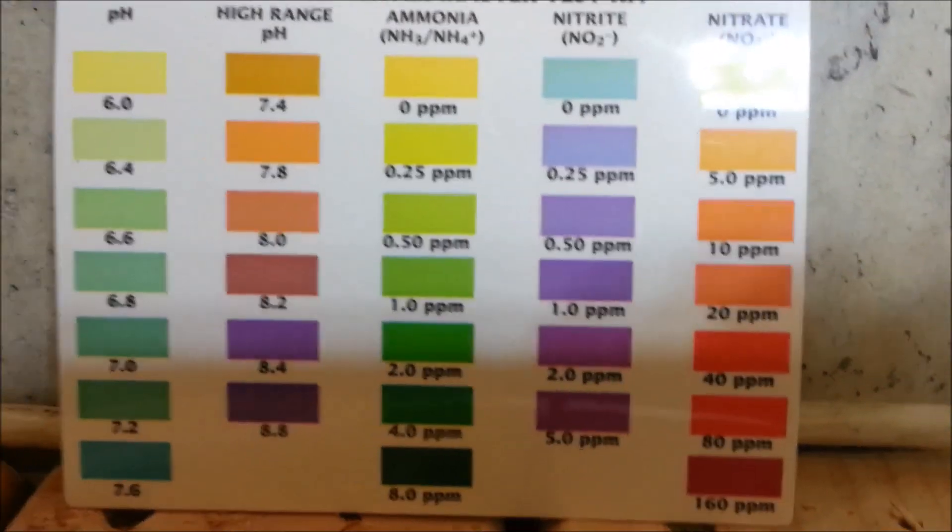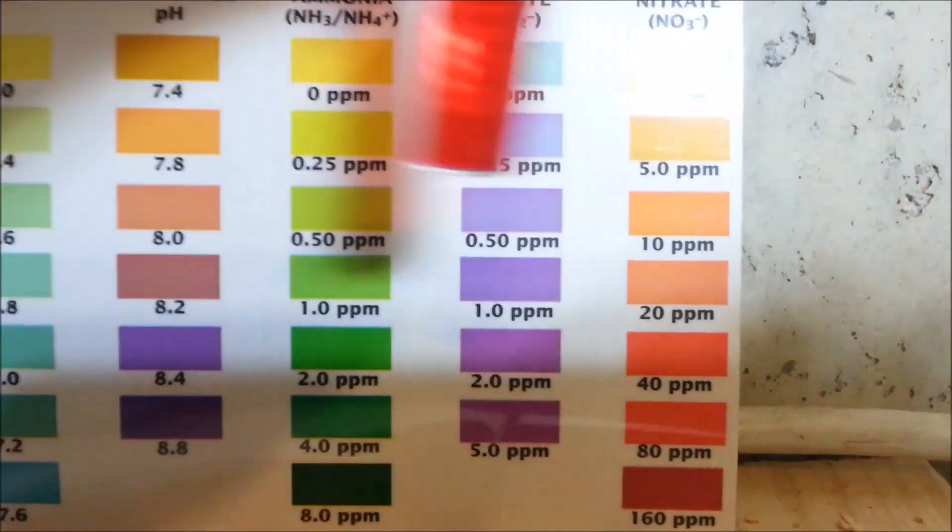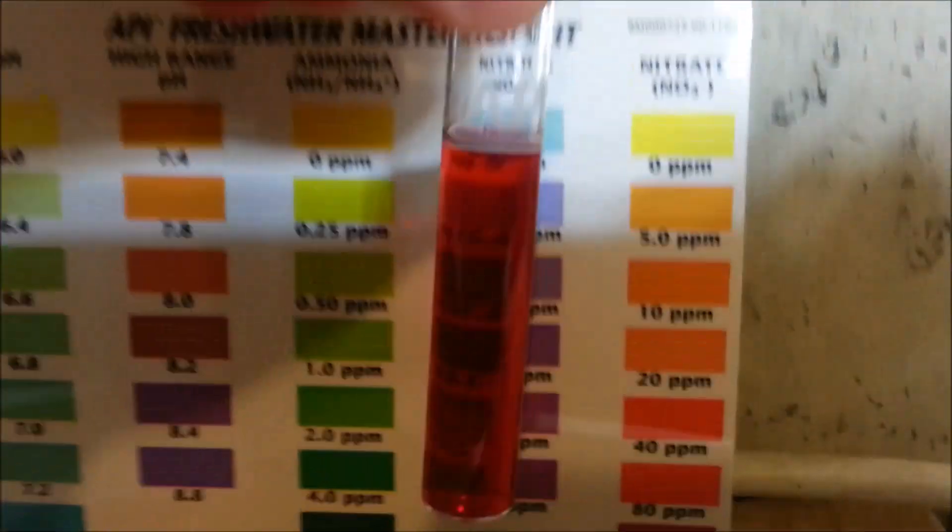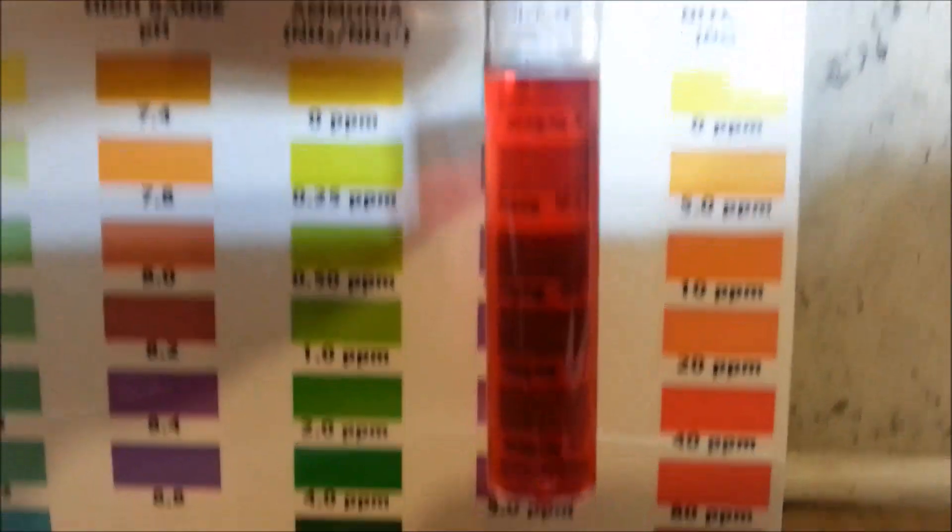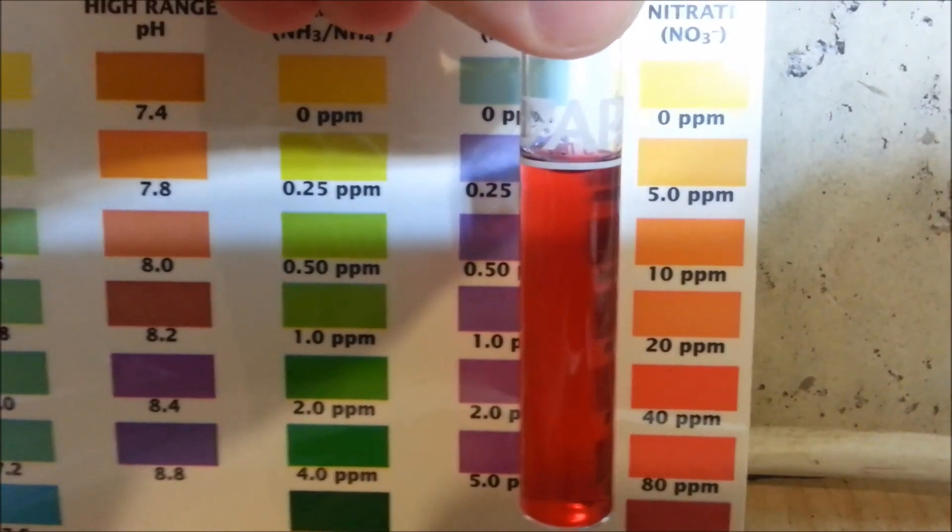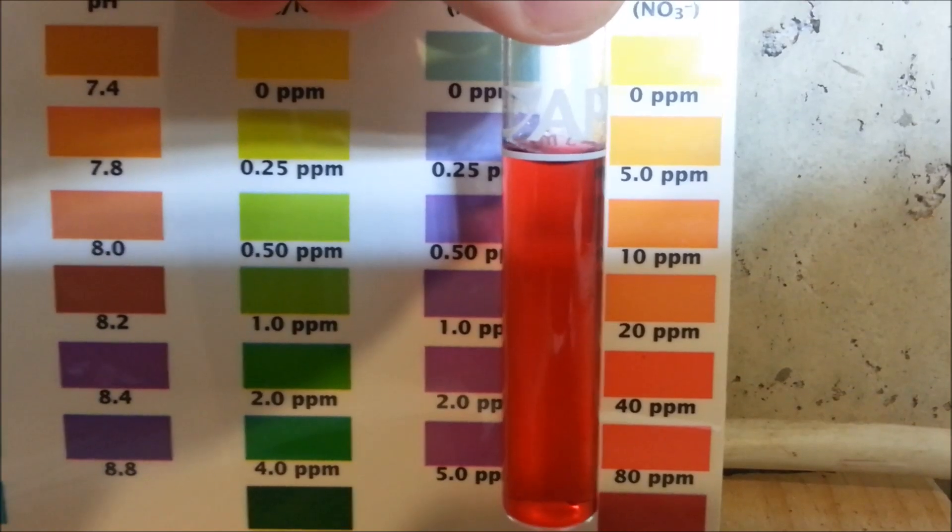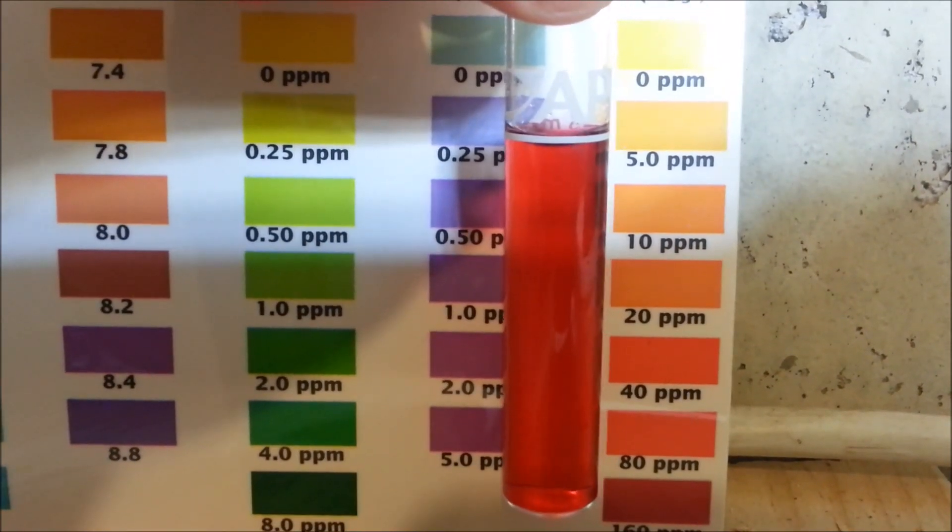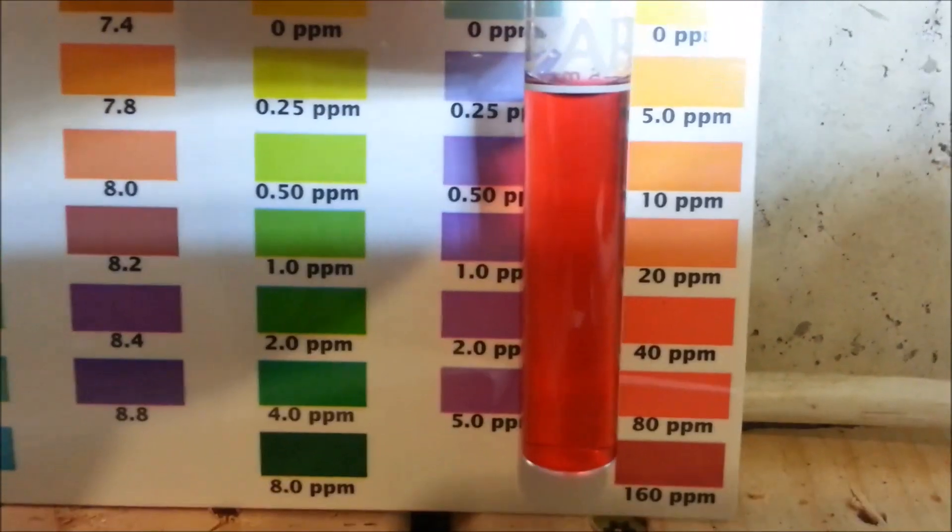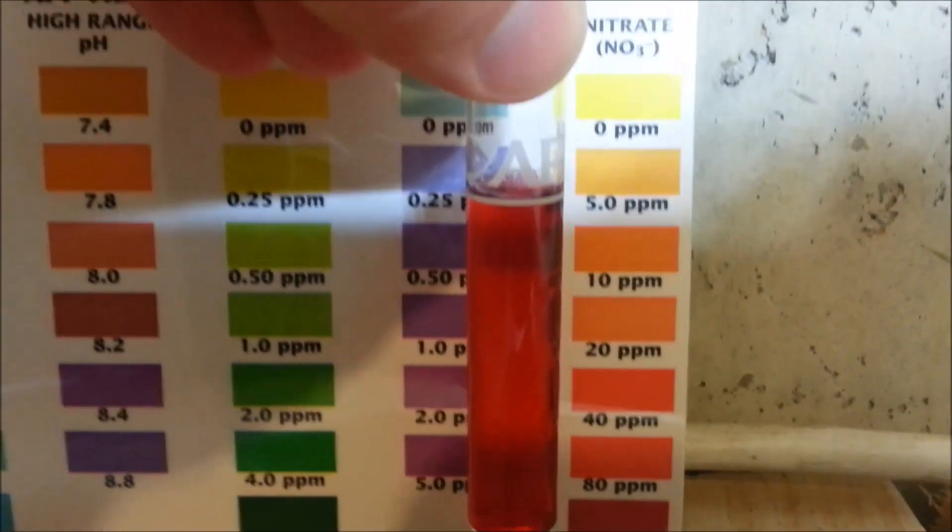The last one here is nitrates - sorry about that glare. Nitrates, this is the one that you want to be a little bit higher. That's giving your plants some food. I'm going to say probably about between 40 and 80 parts per million on that. This is good - that means the system's working. It's finally kind of regulated itself a little bit.